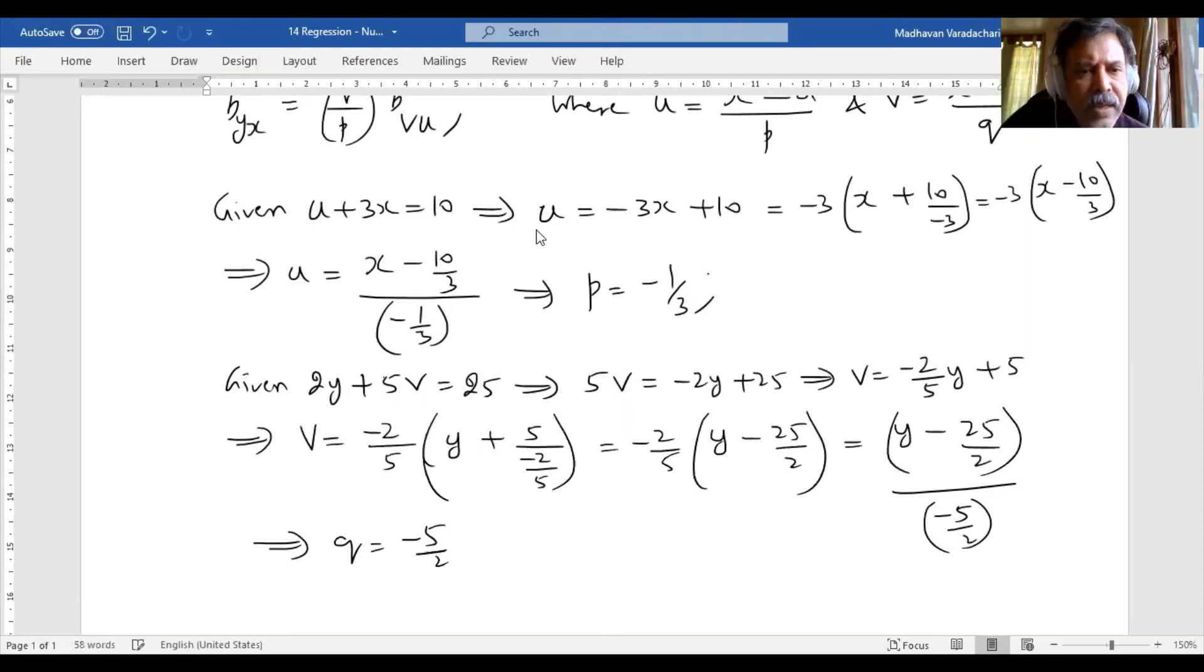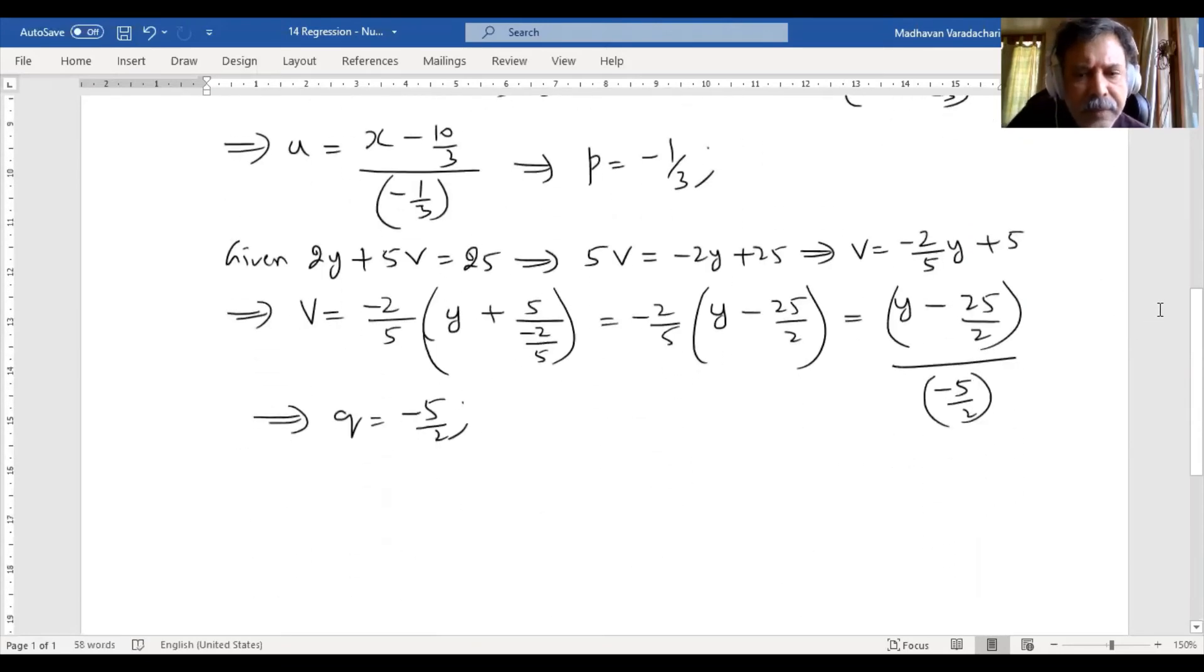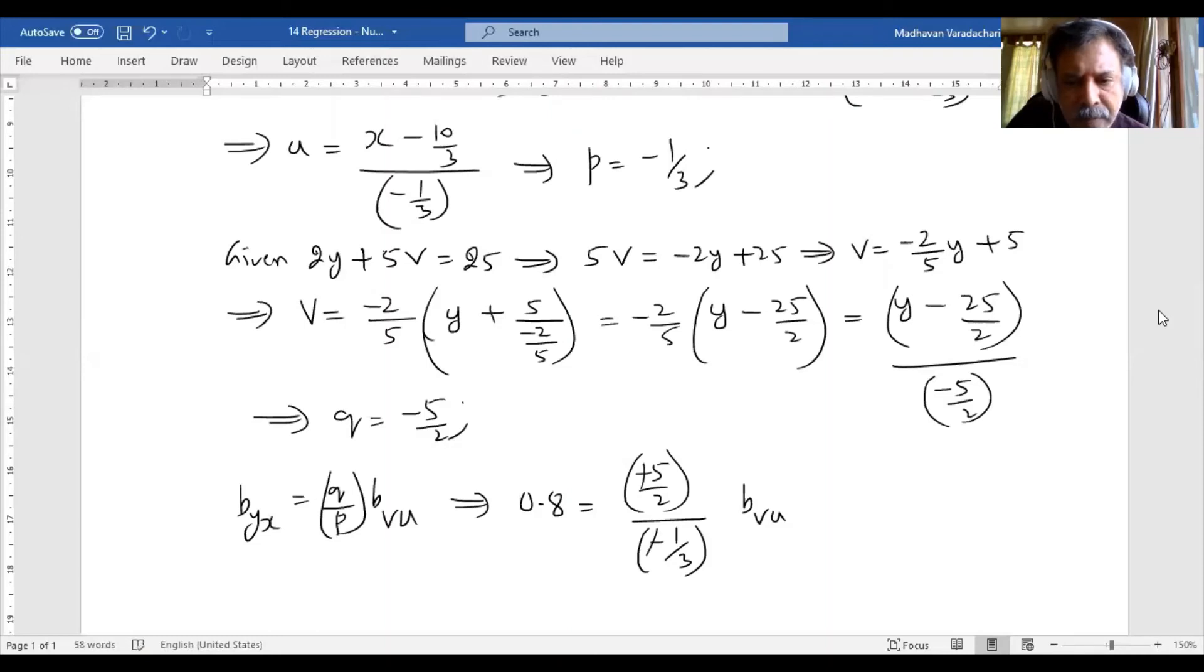So now we can substitute this. b_yx is equal to q by p times b_vu. b_yx is known to be 0.8. q by p: q is negative 5 by 2, and p is negative 1 by 3 times b_vu. I can cancel first this negative negative.